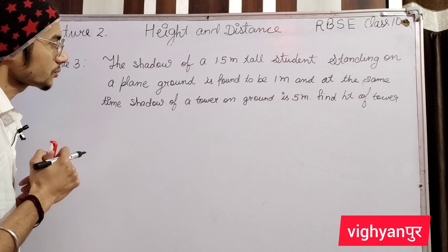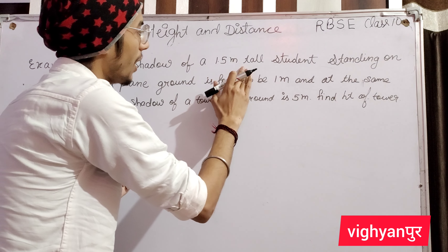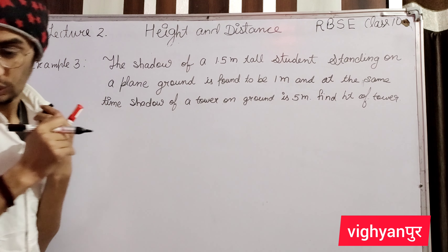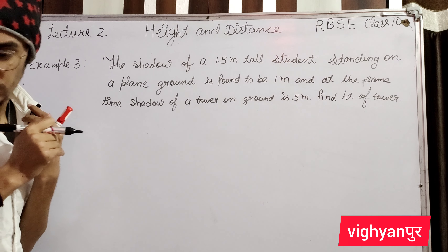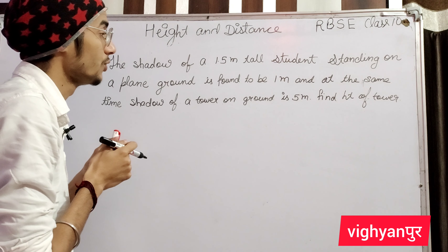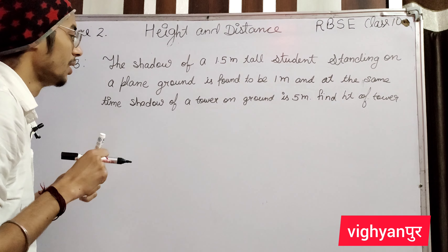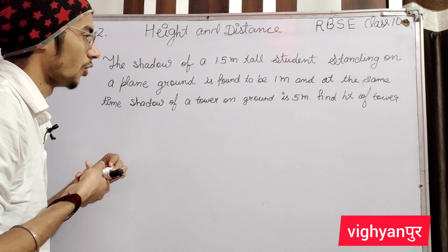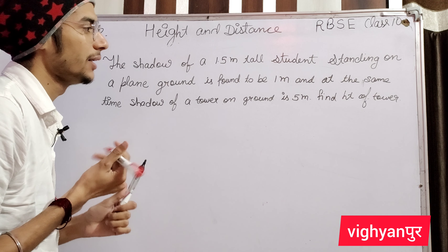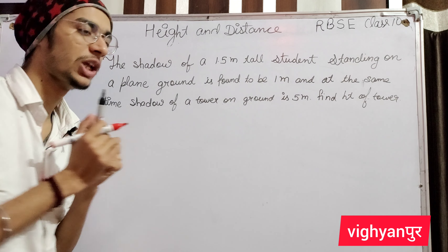Dear students, we are now discussing Example number 3. The shadow of a 1.5 meter tall student standing on plain ground is found to be 1 meter, and at the same time the shadow of a tower on the ground is 5 meters. Find the height of the tower.